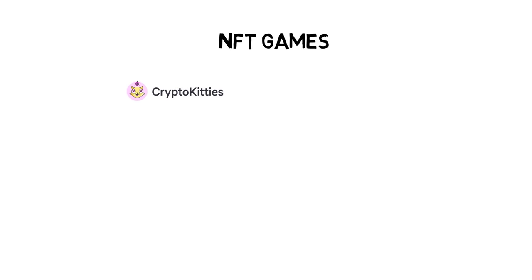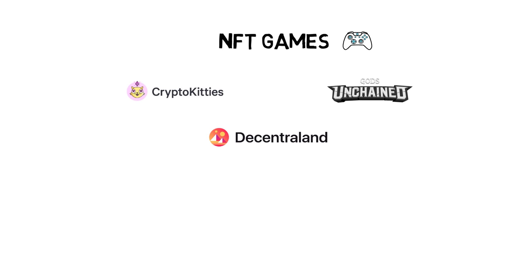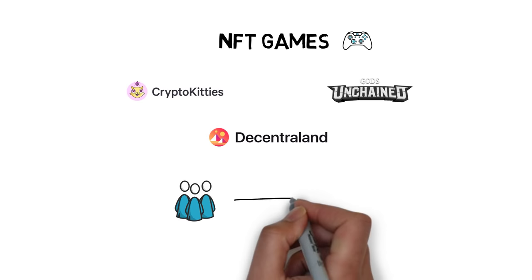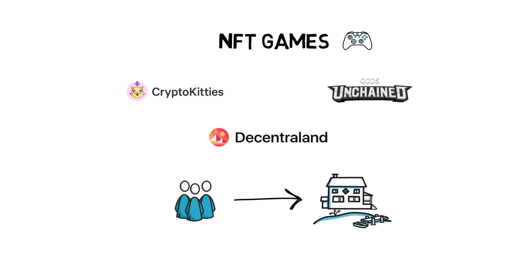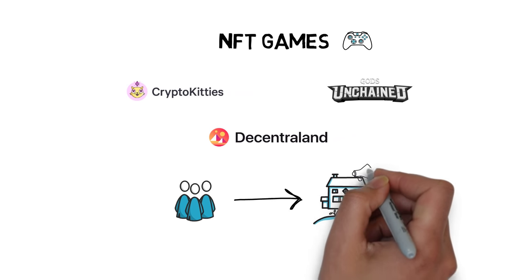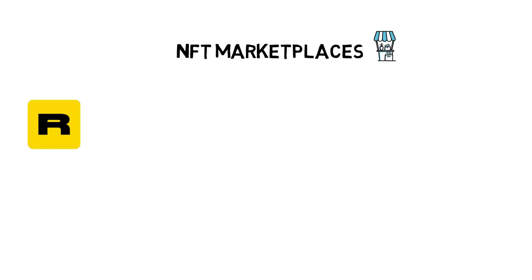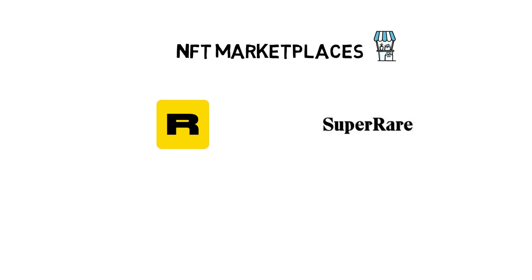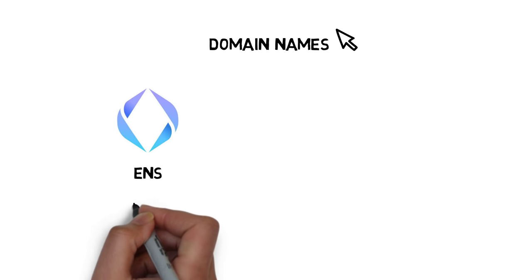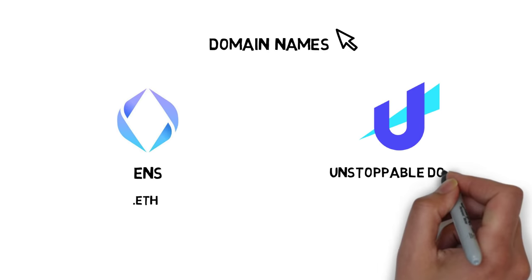Besides CryptoKitties, there are a few other fairly popular games leveraging the power of NFTs, such as Gods Unchained and Decentraland. Decentraland is an interesting example as players are able to buy parcels of digital land that can be later resold or even used as advertising space within the game. Other examples include marketplaces for digital art such as Rarible and SuperRare, and even aggregators of marketplaces. Yet another example of something scarce that can be represented as NFTs are domain names — for example, Ethereum Naming Service with the .eth extension and Unstoppable Domains with the .crypto extension.